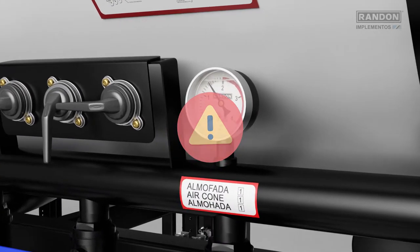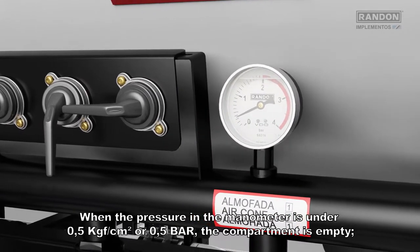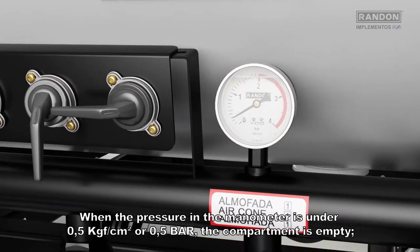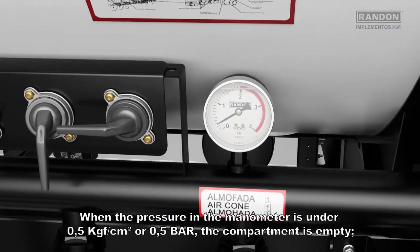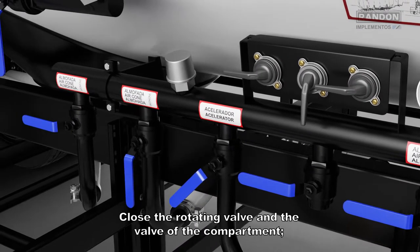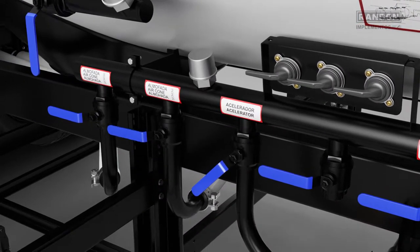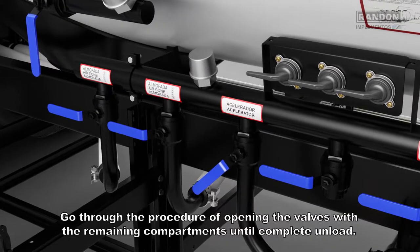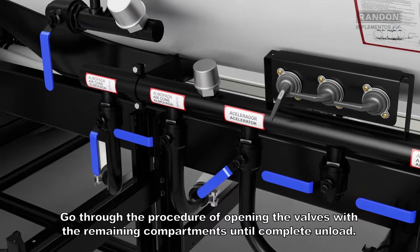Attention! When the pressure in the manometer is under 0.5 kilogram force per square centimeter or 0.5 bar, the compartment is empty. Close the rotating valve and the valve of the compartment. Go through the procedure of opening the valves with the remaining compartments until complete unload.